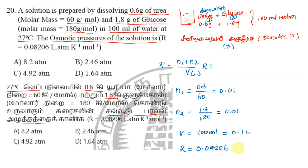T is 27 degree Celsius. Convert to Kelvin, add 273, equals 300 Kelvin. So this is the data. How to solve this? Pi is equal to...